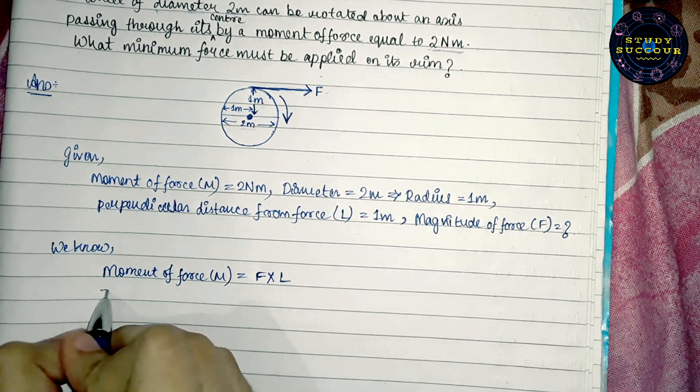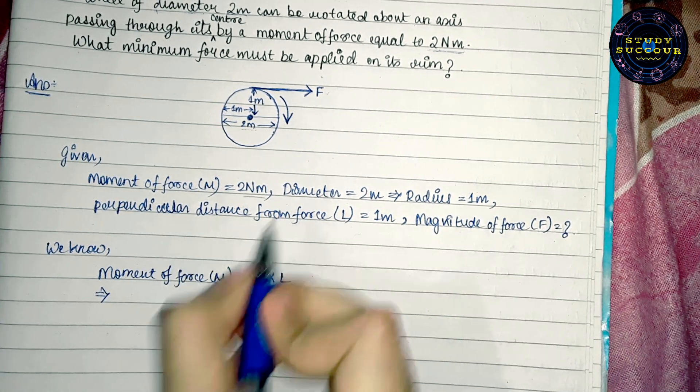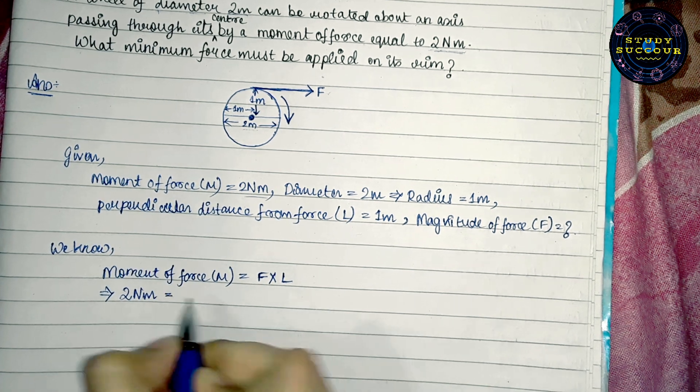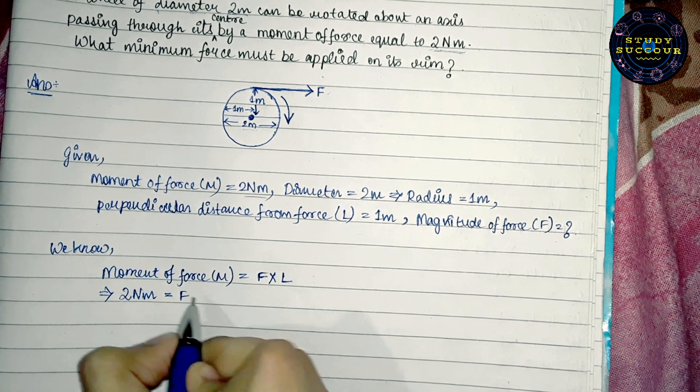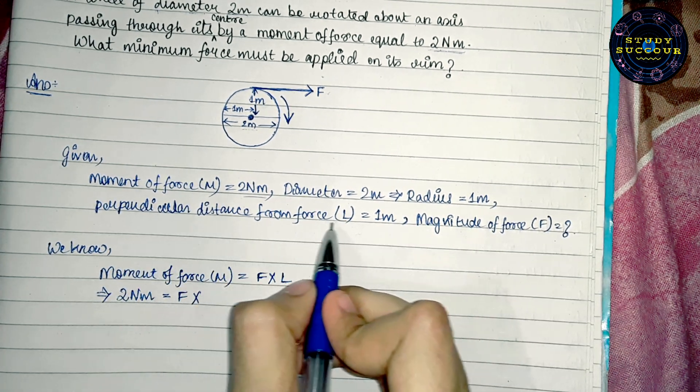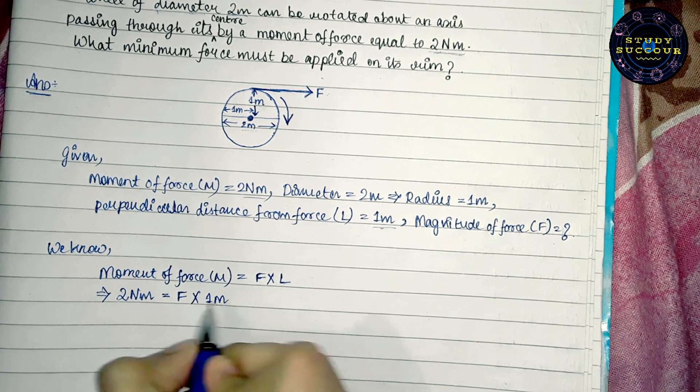Now, we have the moment of force as 2 newton meter and we don't know the force we have to find it and we have the perpendicular distance from the force which is 1 meter.